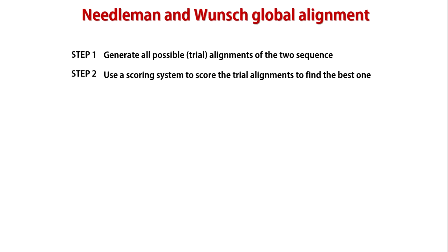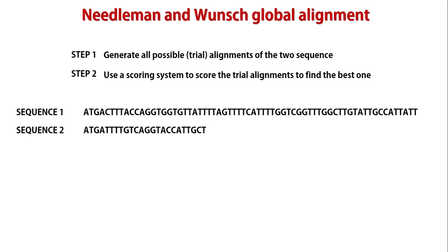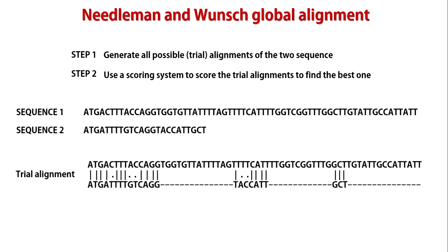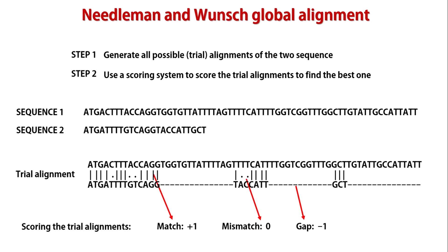The Needleman-Wunsch algorithm includes two parts. First, it generates all possible alignments of the two sequences — each alignment includes a unique combination of match, mismatch, single insertion and deletions. The second step is to use a scoring system to score these trial alignments to find the best one. Every match in a trial alignment is given a score of one, every mismatch is given a score of zero, and individual gaps add a penalty score. These numbers are then added across the alignment to obtain a total score.